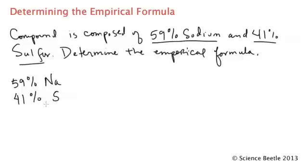After I write it down, make sure this totals 100%. If I add these numbers together, 9 and 1 is 10, carry the 1, 6 and 4 is 10. So I know that 100% of the total mass is attributed to sodium and sulfur for this particular compound.